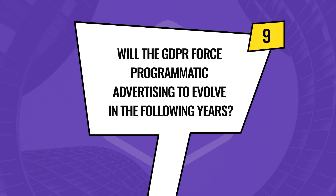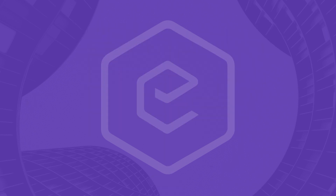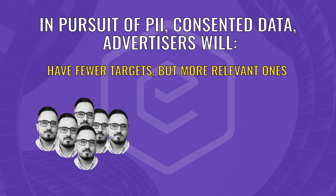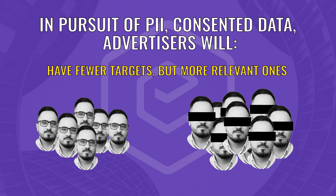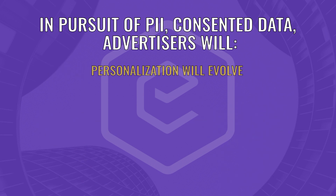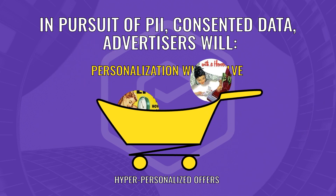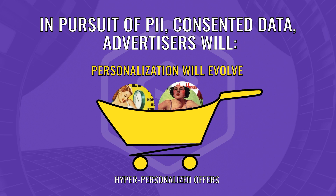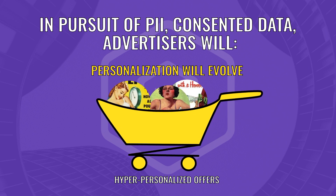Will GDPR force programmatic advertising to evolve in the following years? Third-party cookies and GDPR pose similar challenges to advertisers. In pursuit of consented personally identifiable information data, advertisers will have fewer but more relevant targets, while the industry could see a move toward getting more informed consent for profiles used in programmatic advertising. These consented profiles will provide richer data, meaning campaigns can be more targeted. Personalization will evolve — only visitors with intent to buy are likely to accept cookies, so ads will become hyper-personalized and bring leads of much better quality.